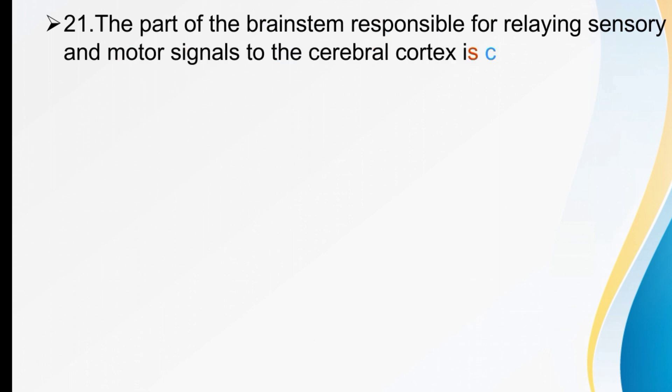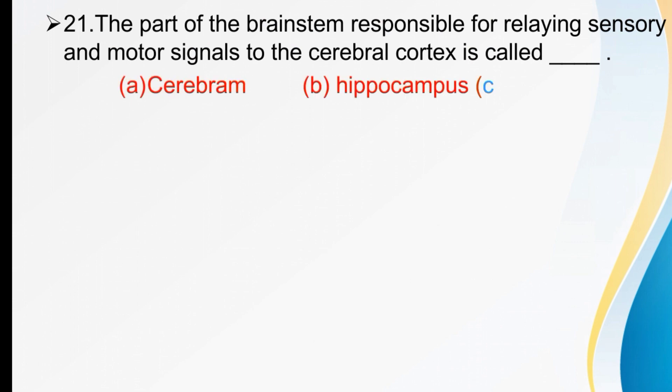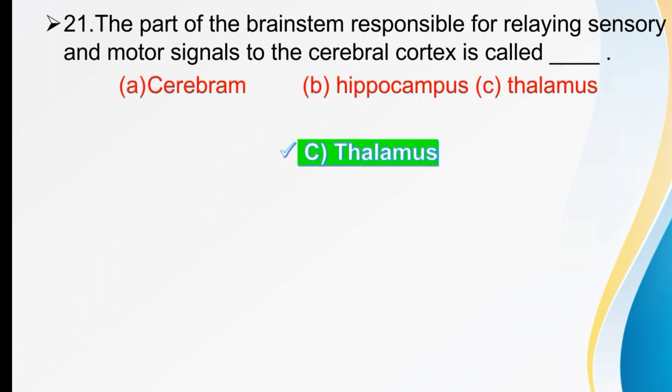The part of the brain stem responsible for relaying sensory and motor signals to the cerebral cortex is called dash. Options are cerebrum, hippocampus, or thalamus. The right answer is thalamus.